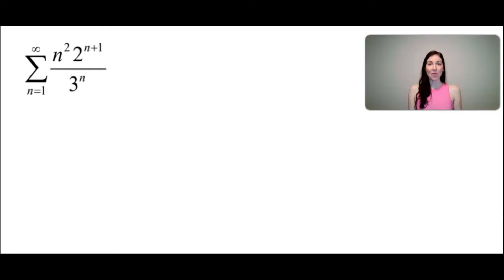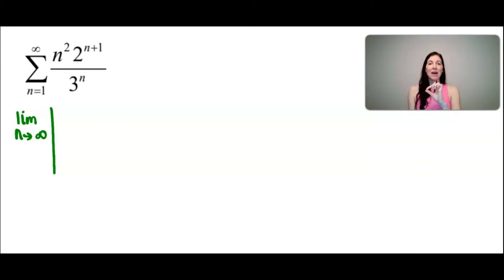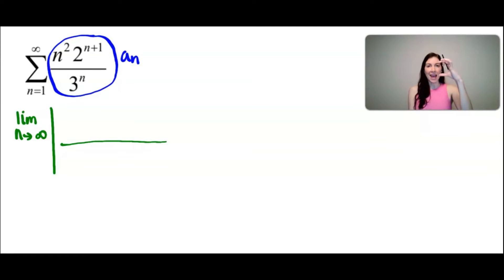For our first example, we want to use the ratio test in order to determine if this series converges or diverges. As we saw with the ratio test, we need to find the limit as n approaches infinity of the absolute value of the a_(n+1) term divided by the a_n term. In our original problem, this is going to be considered the a_n term, so I'm going to copy that down, and in the numerator it will be the a_(n+1) term.